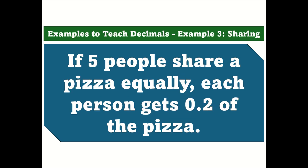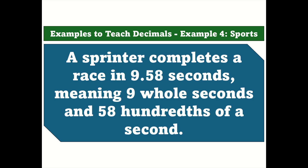Example 3 — Sharing. If 5 people share a pizza equally, each person gets 0.2 of the pizza. Example 4 — a sprinter completes a race in 9.58 seconds, meaning 9 whole seconds and 58 hundredths of a second.